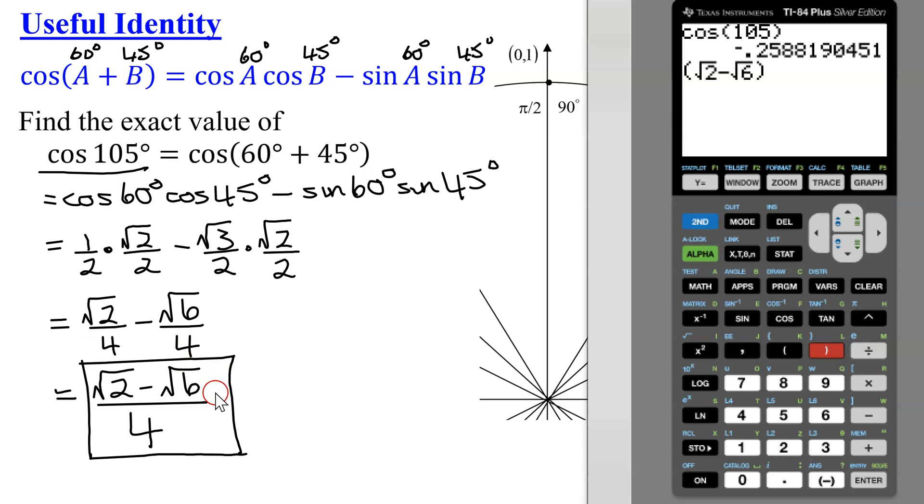So that is my whole numerator, and then we're just going to divide it by 4. Do I get the same answer? Yes, so this tells me this is the exact answer for the cosine of 105 degrees.